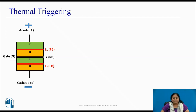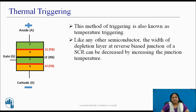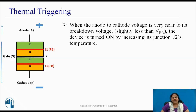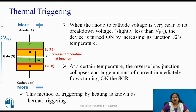Another method uses thermal triggering, also known as temperature triggering. Like other semiconductors, the width of the depletion layer of the reverse junction of an SCR can be decreased by increasing its junction temperature. When the anode-to-cathode voltage is slightly less than the forward break-over voltage VBO, the device is turned ON by increasing junction J2's temperature. At a certain temperature, this reverse junction collapses and a large amount of current immediately flows, turning ON the SCR. This method of triggering by heating the junction is known as thermal triggering.